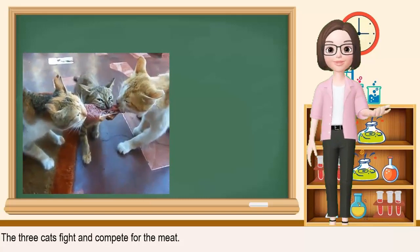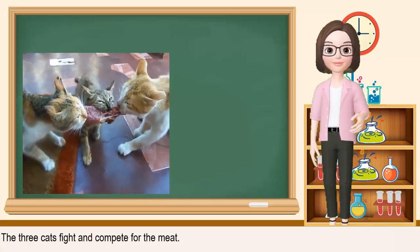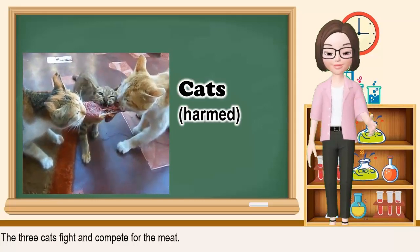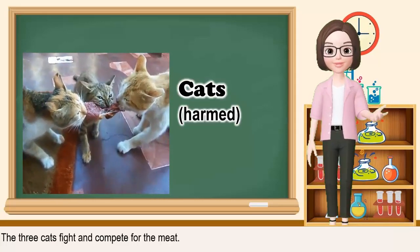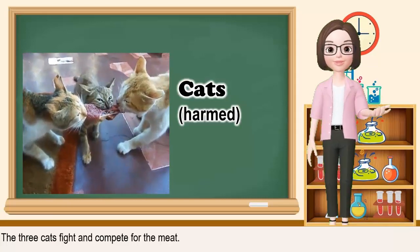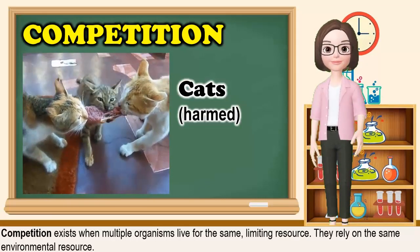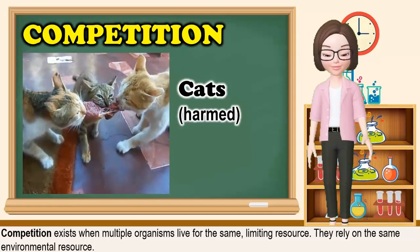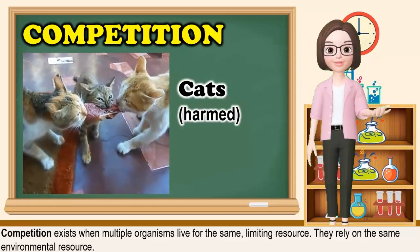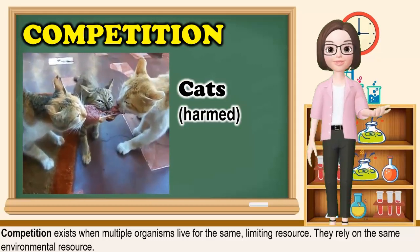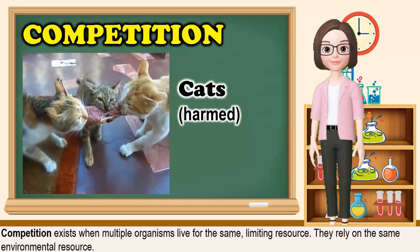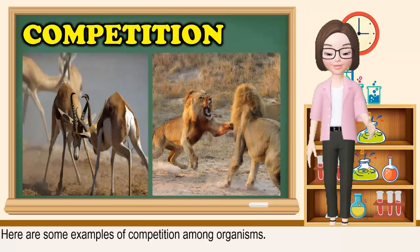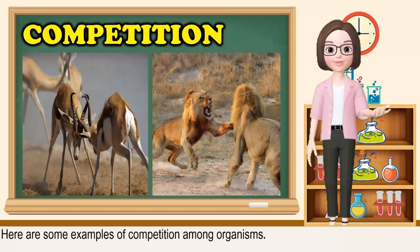What about this video? What can you see? You are correct! Three cats fighting and competing for a piece of meat. This is called competition. Competition exists when multiple organisms vie for the same limiting resource — they rely on the same environmental resource.